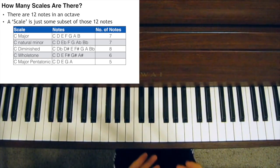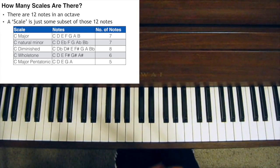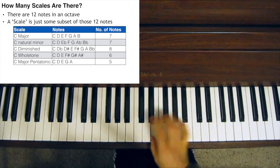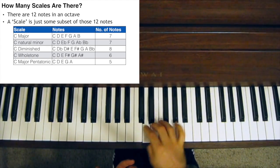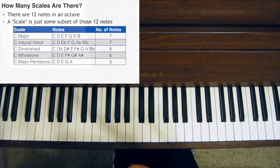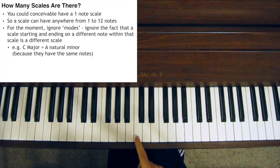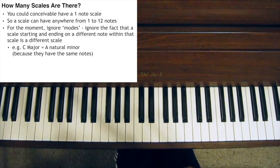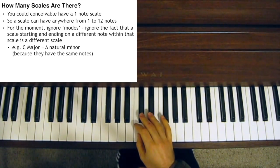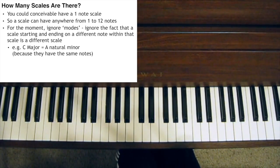Many scales have eight notes, like the diminished scale, or six notes, like the whole-tone scale, or five notes, like the pentatonic scale. You could even conceivably have a one-note scale. So let's say that you can have anywhere between one note and twelve notes in a scale, with the scale that has all twelve notes called the chromatic scale.